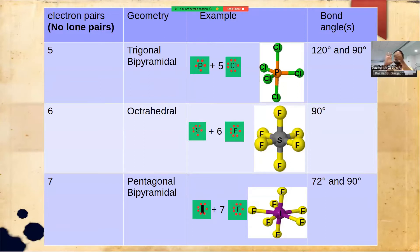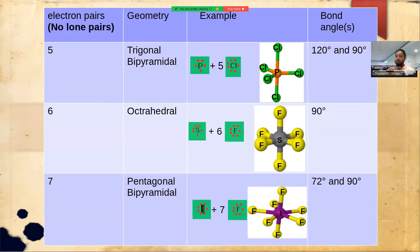When we have six electron pairs, the shape of the molecule is octahedral — like a square with a pyramid going up and a pyramid coming down, also called square bipyramidal. All bond angles are 90 degrees, whether measured between two equatorial fluorine atoms or between one axial and one equatorial fluorine. For example, SF₆: sulfur has six valence electrons, shared with six fluorine atoms (each contributing one electron), giving a perfect octahedral geometry.